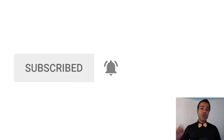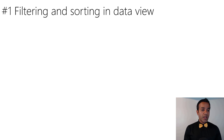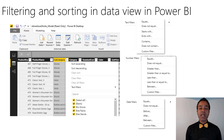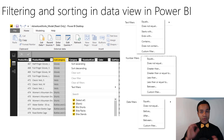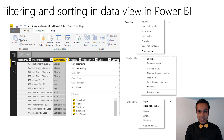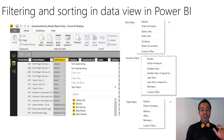Let's start with number one: filtering and sorting in data view. This is something which has always been available in Excel Power Pivot, which is a cousin of Power BI, but now it comes to Power BI. In Power BI Desktop's data view you can filter and sort. This is a convenience feature — as you're working with data, checking on it or trying to debug a measure, it makes it very convenient.